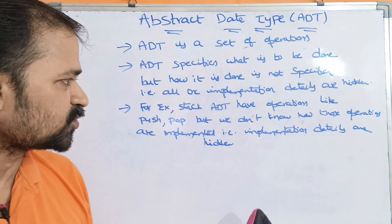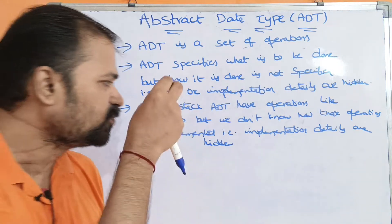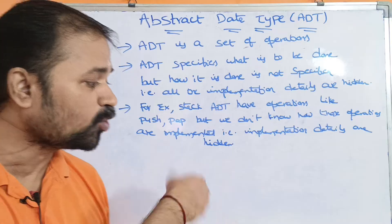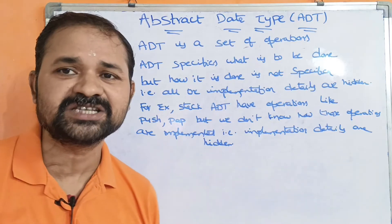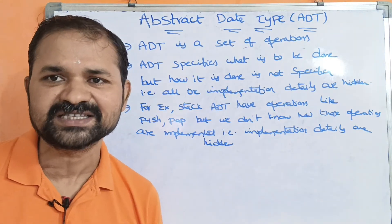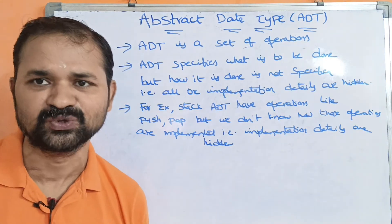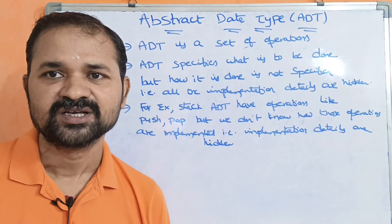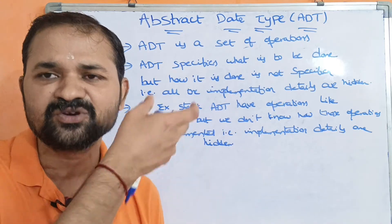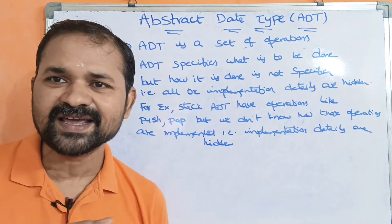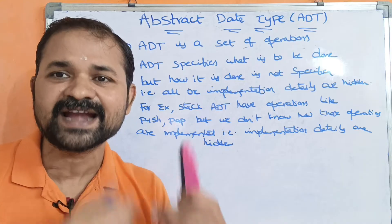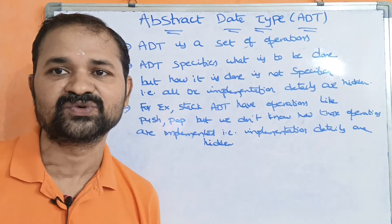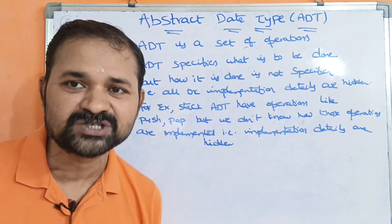Suppose we use this board. We can use the board, but internally how this board was designed and how it was manufactured — we don't know that. Similarly, suppose we use an AC. We can use the AC, but internally how the AC was designed and implemented — we don't know that.